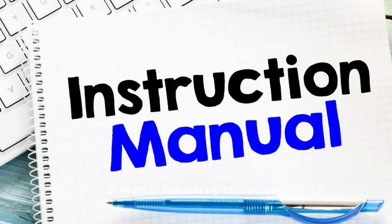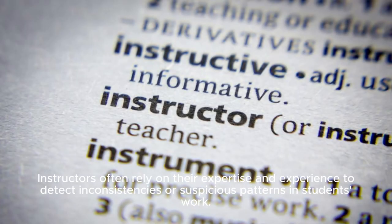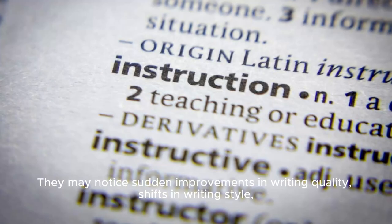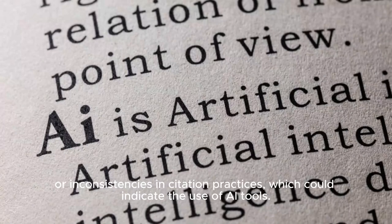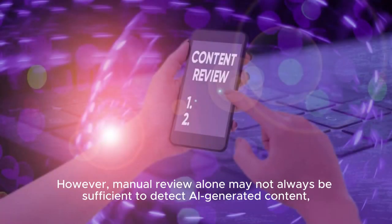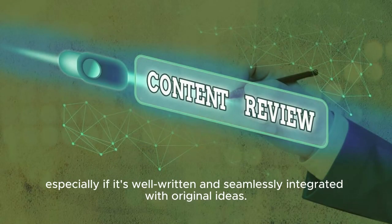Manual Review by Instructors. Instructors often rely on their expertise and experience to detect inconsistencies or suspicious patterns in students' work. They may notice sudden improvements in writing quality, shifts in writing style, or inconsistencies in citation practices, which could indicate the use of AI tools. However, manual review alone may not always be sufficient to detect AI-generated content, especially if it's well-written and seamlessly integrated with original ideas.